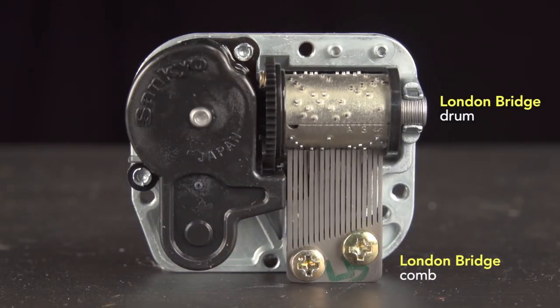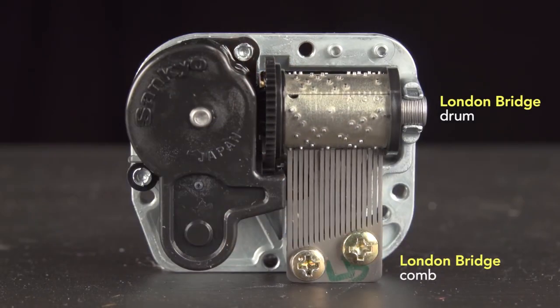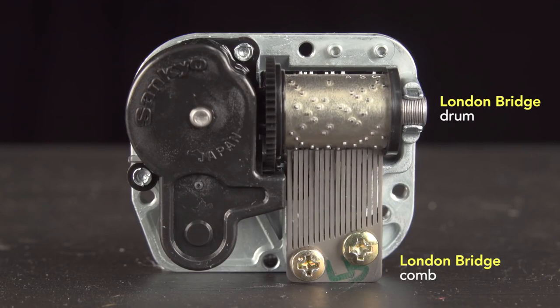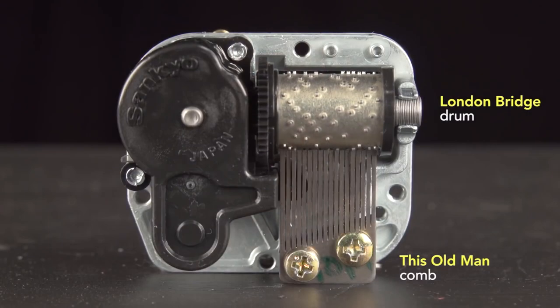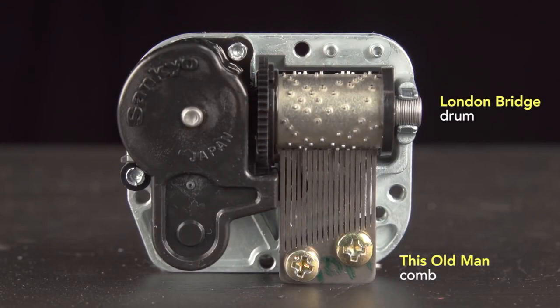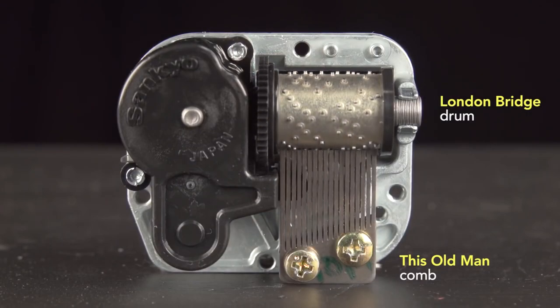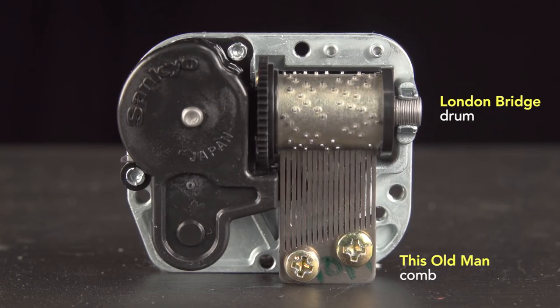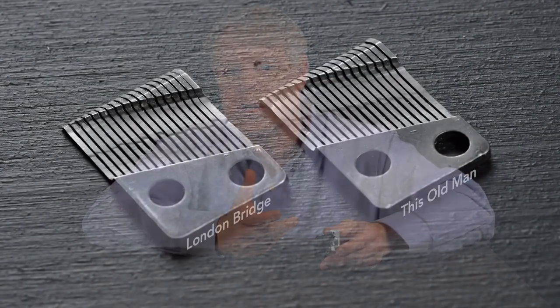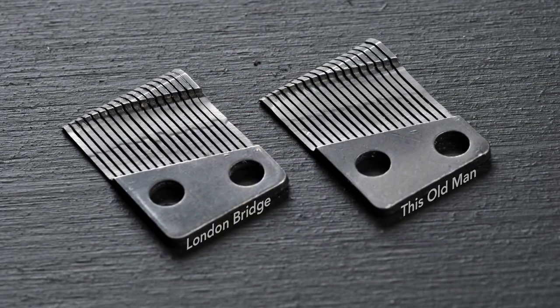Here's a music box playing London Bridge, with a comb specifically designed for this melody. And now, here it is with a comb cut for a different melody, this old man. The timing is the same, but the notes are different, and it sounds odd. The difference in weighting is so subtle that these two combs are indistinguishable by eye.